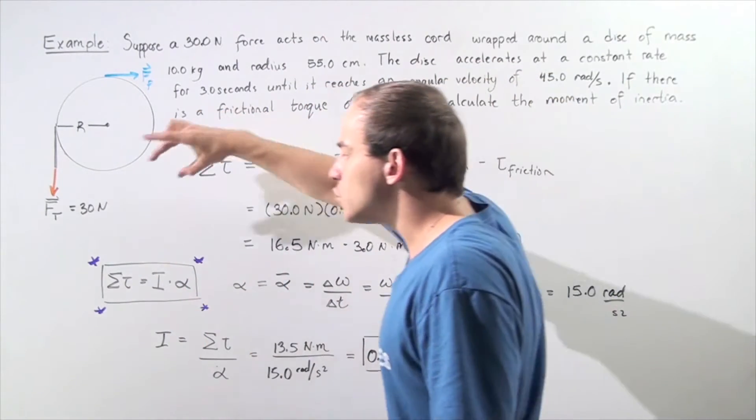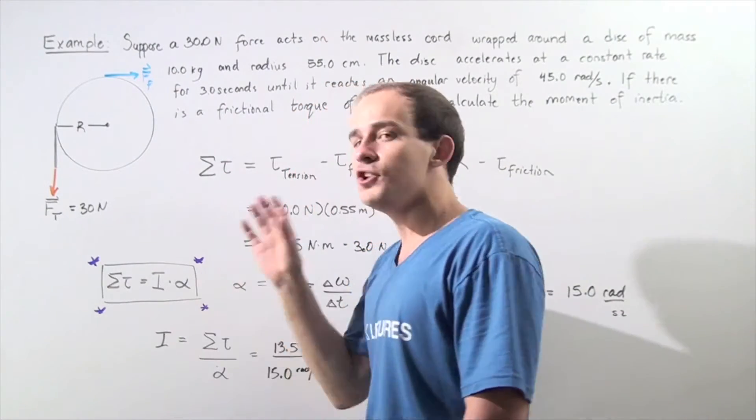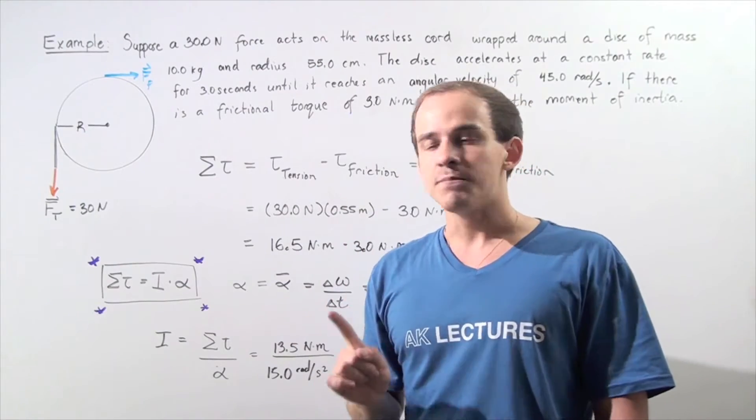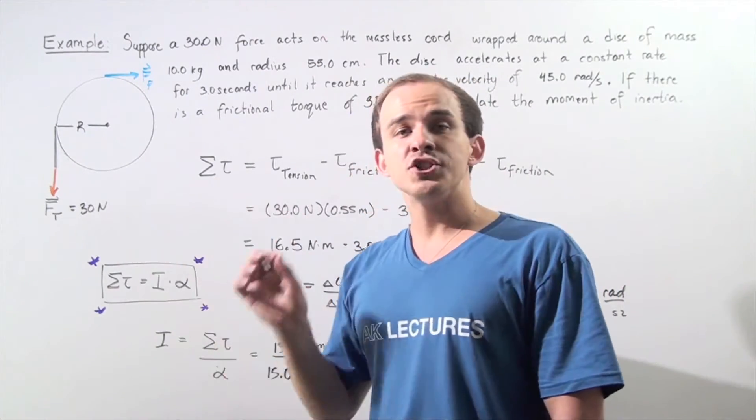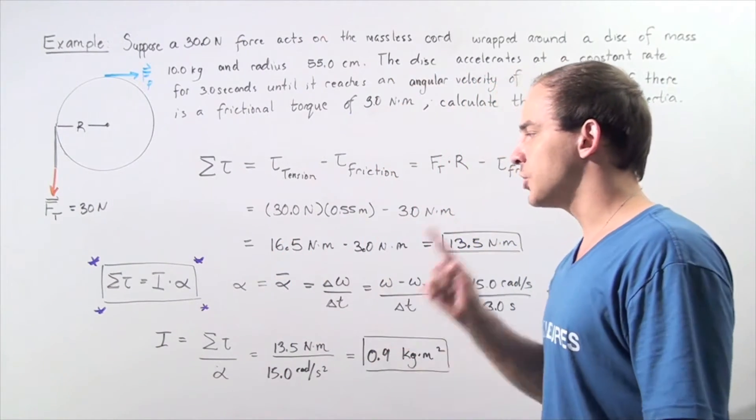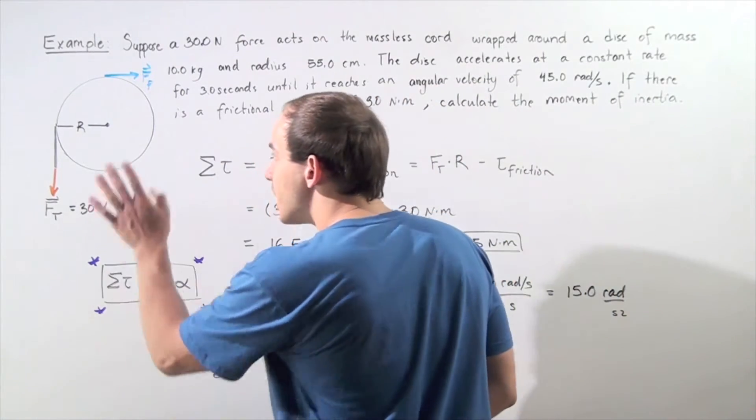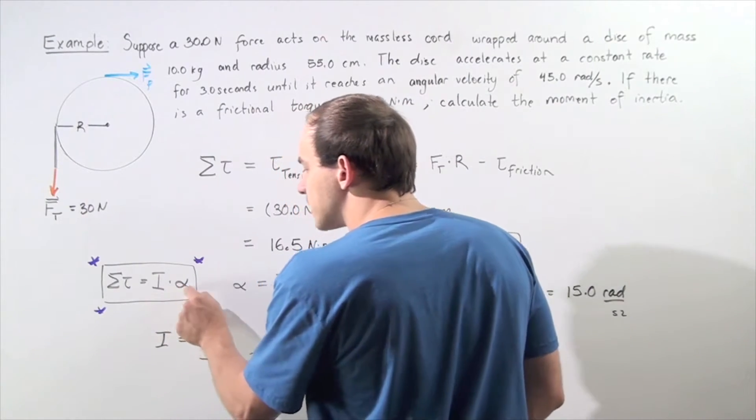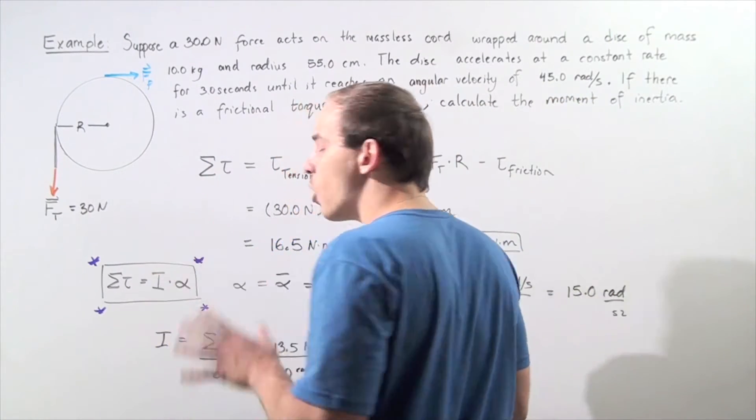We'll use the formula that is the equivalent of Newton's second law for rotational motion to solve for I, the moment of inertia. First, we calculate the net torque on the object, then the angular acceleration, and finally solve for I, the moment of inertia.